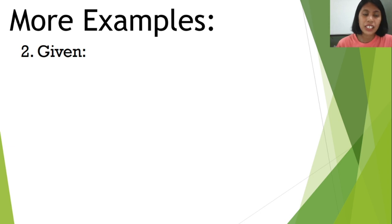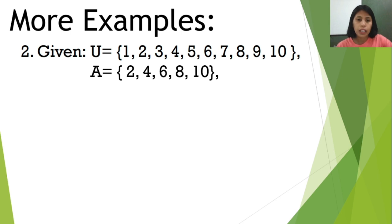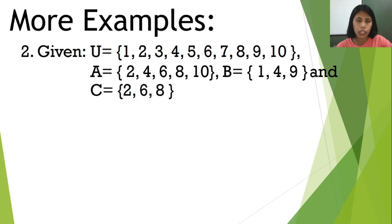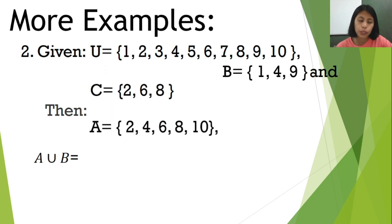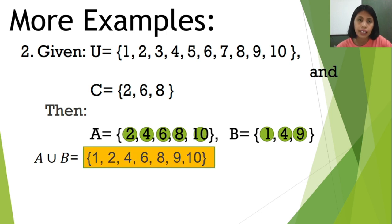Next example: the universal set is {1, 2, 3, 4, 5, 6, 7, 8, 9, 10}, set A with elements {2, 4, 6, 8, 10}, and set B with elements {1, 4, 9, 2, 6, 8}. We need to find the union of sets A and B. For union, we combine. Combining all elements of A and B — noting each element only once — our answer is {1, 2, 4, 6, 8, 9, 10}.